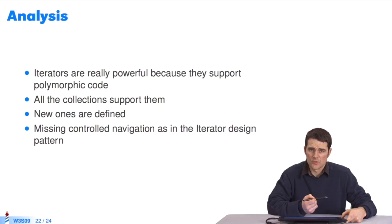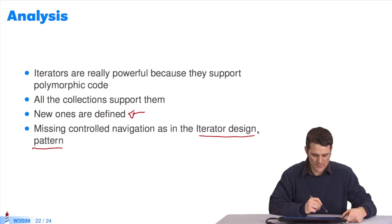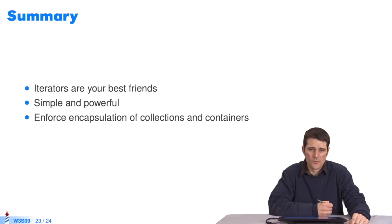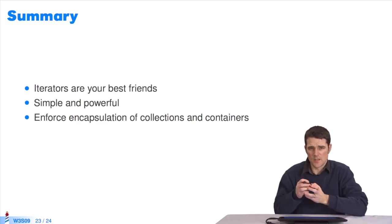In Pharo, iterators are very powerful, as we just saw. Every collection supports the iterators polymorphically. Programmers use iterators which get implemented by collection classes according to the collection they represent. You can define new ones. It's very interesting. I can define my own iterators on the collection classes. There's a small nuance for those who know the iterator design pattern. A developer cannot choose when to go to the next element. The collection decides it internally. Next isn't sent directly to the iterator. It's a nuance for those who know the iterator design pattern. Iterators are very powerful. They're a programmer's best friends. It makes writing programs easier. You can write short, simple, and elegant code. It ensures data encapsulation in a collection.